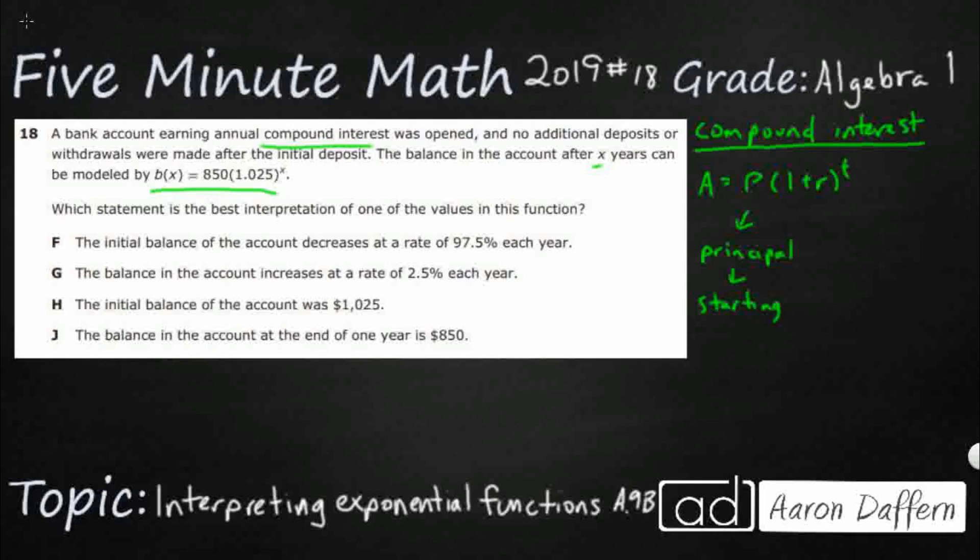And since we're dealing with compound interest, typically they're going to say something like this. There's no additional deposits or withdrawals because if they keep making deposits or they withdraw the money, that P is going to change and you have to recalculate. That's all that means.